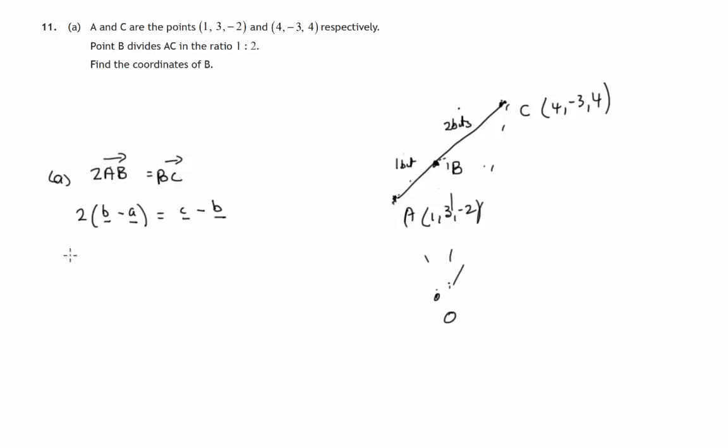And we now have a piece of algebra to do. Even though they're vectors, they behave like normal letters in algebra. We can get rid of the brackets: 2B minus 2A equals C minus B. Remember it's B we're trying to find. So we need to solve this for B. Let's get B on the left hand side, add B to both sides giving us 3B, and add 2A to both sides.